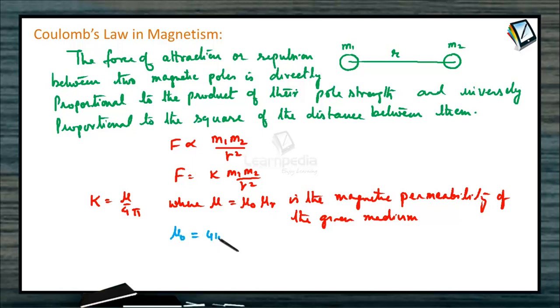Mu 0, its value is 4 pi into 10 to the power of minus 7 henry per meter and it is called magnetic permeability of free space.